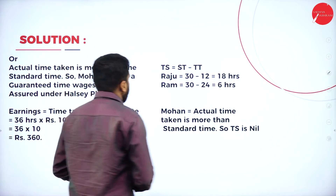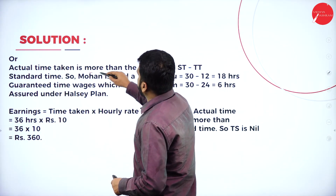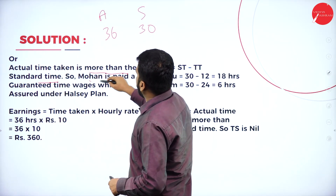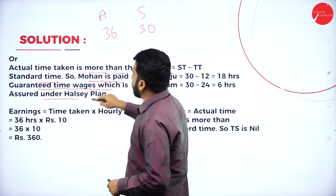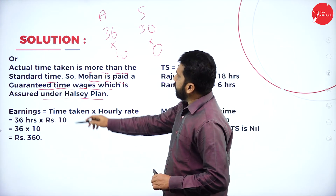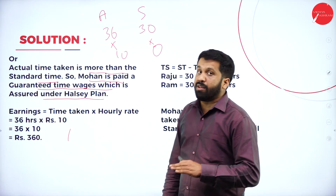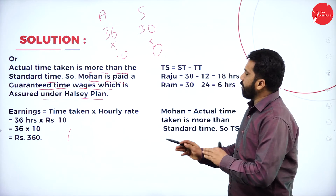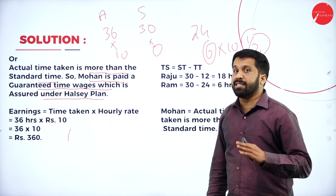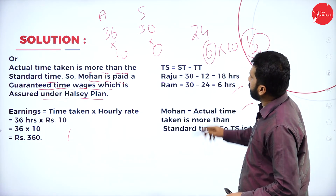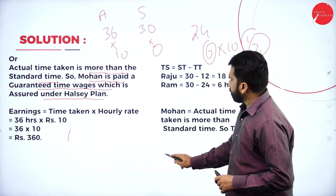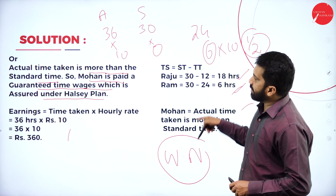Note: if time taken is more than standard time, then time saved is zero and no bonus is earned. It's like being given 3 hours for an exam but taking 3.5 hours — the extra time is not rewarded. Working notes: time saved for Raju = 18 hours, time saved for Ram = 6 hours, time saved for Mohan = 0.